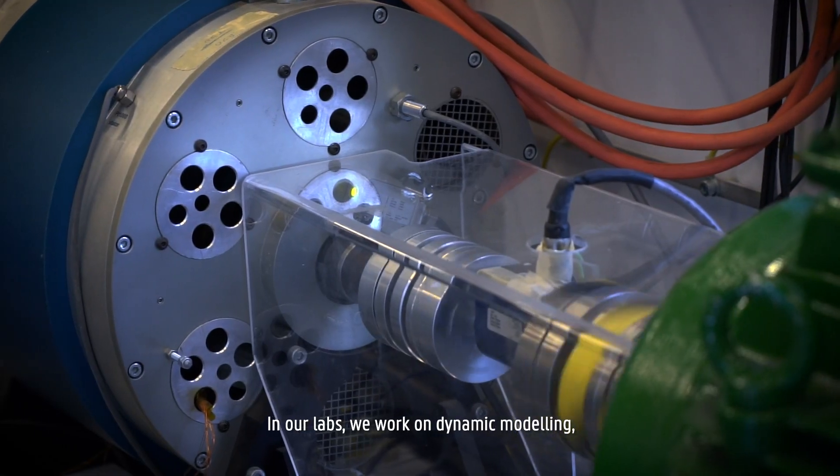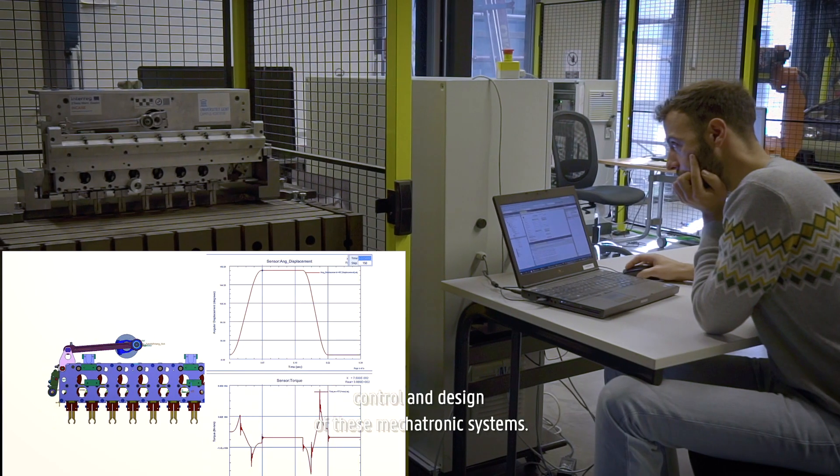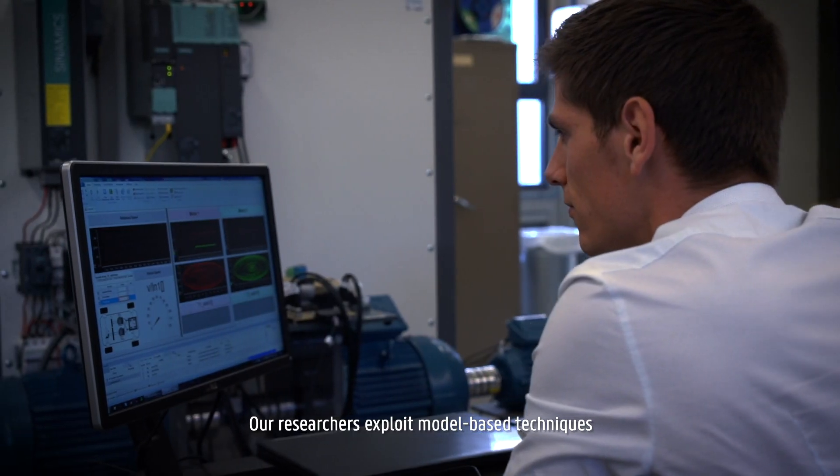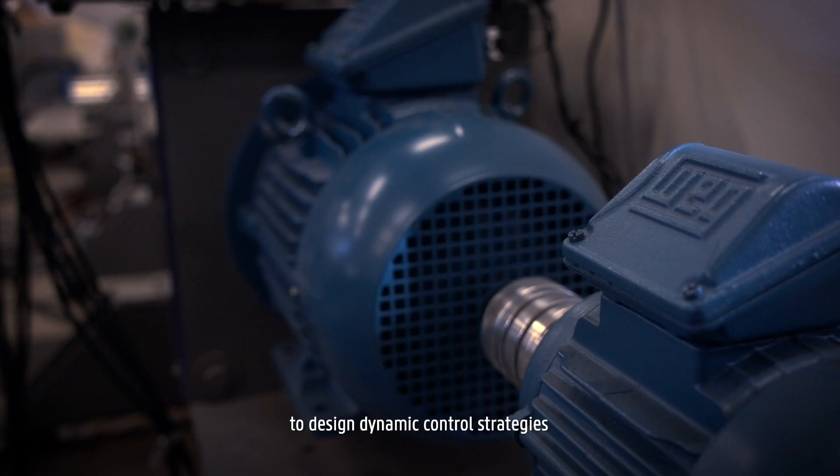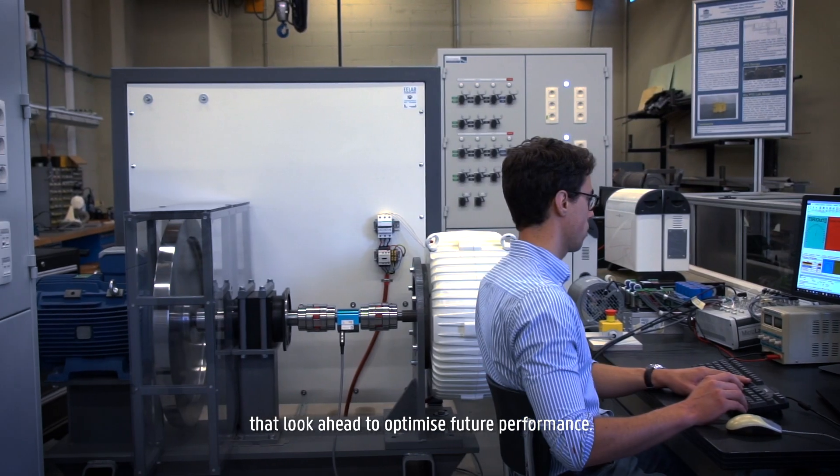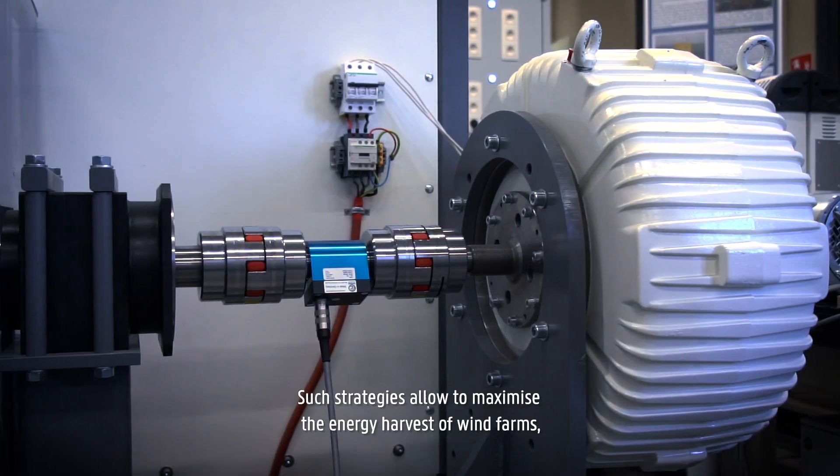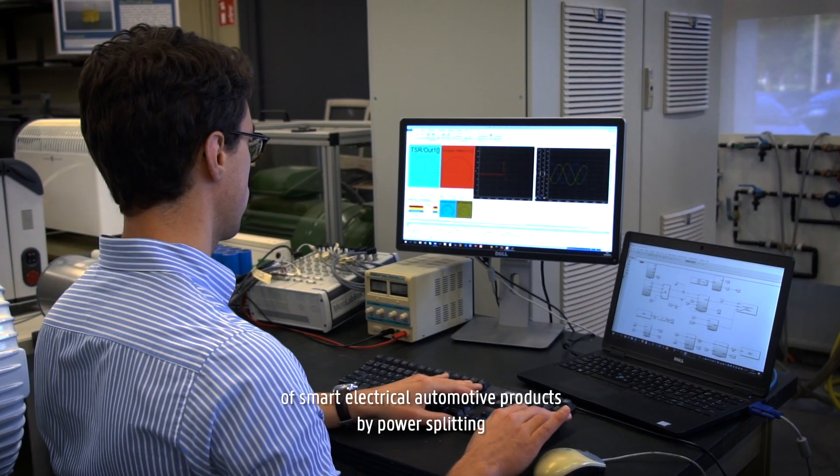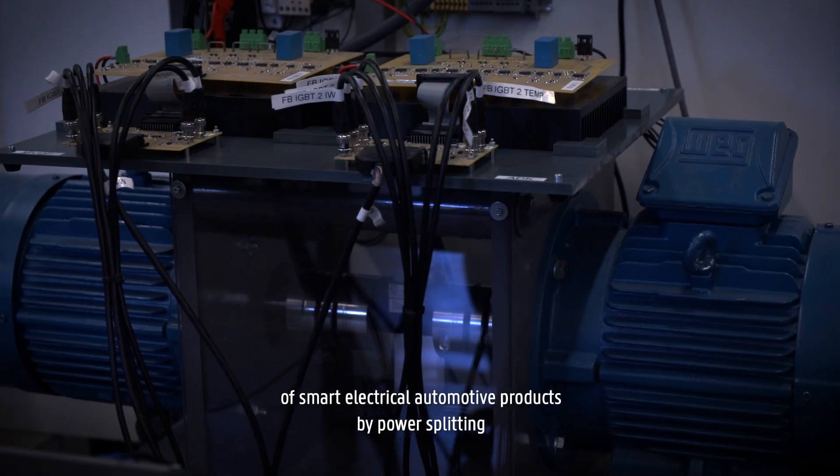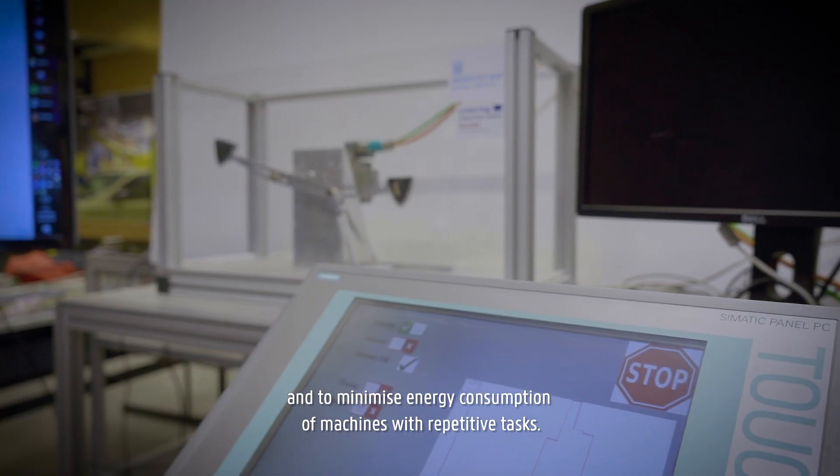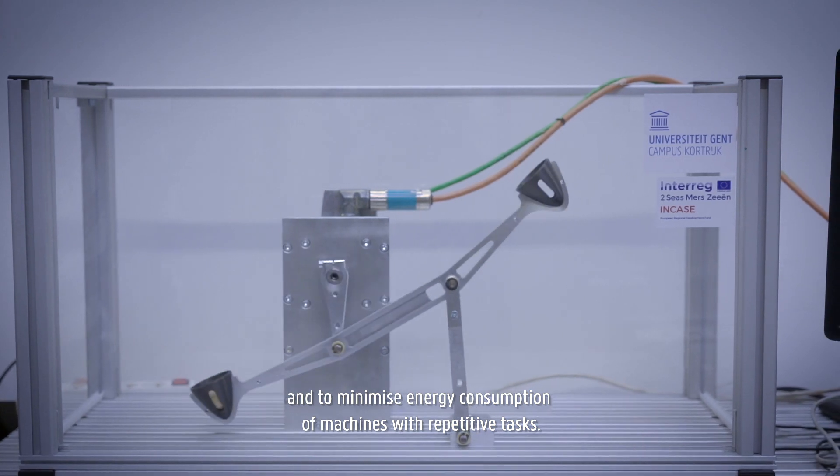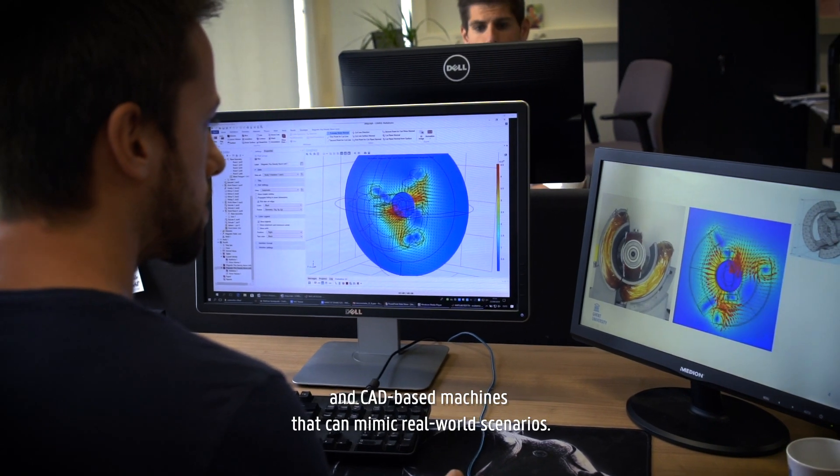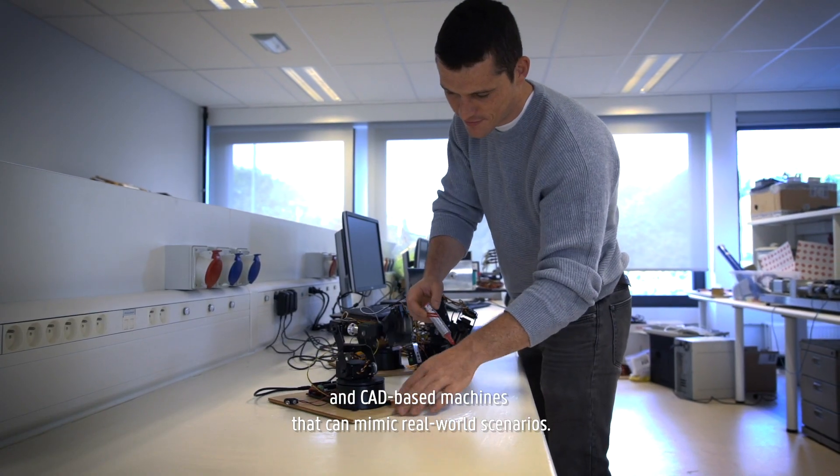In our labs, we work on dynamic modeling, control and design of these mechatronic systems. Our researchers exploit model-based techniques to design dynamic control strategies that look ahead to optimize future performance. Such strategies allow to maximize the energy harvest of wind farms, to increase the driving range of smart electrical automotive products by power splitting and to minimize energy consumption of machines with repetitive tasks. To study these systems, we use both electromechanical emulators and CAD-based machines that can mimic real-world scenarios.